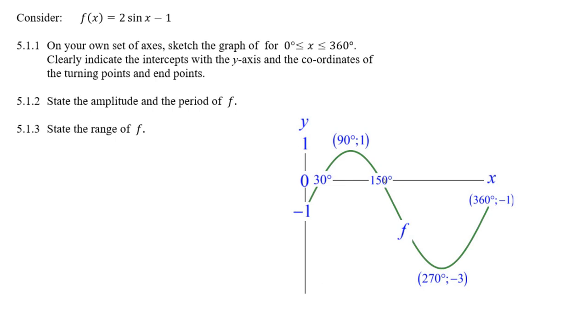How did I know that the x-intercepts are 30 and 150? I want to find out where y is 0. This is something you guys should be able to do. You add 1, and you get 1. Divide by 2. The sine of x is half. Go shift sine on your calculator, and you get x is 30. And 30 degrees works.